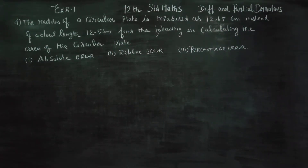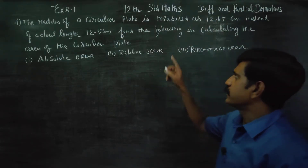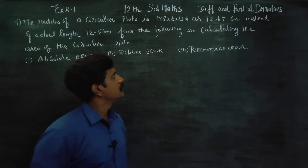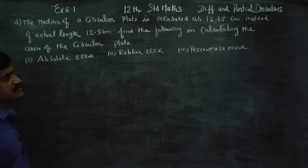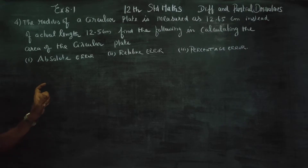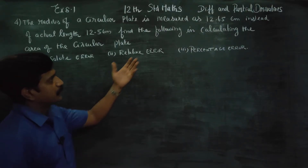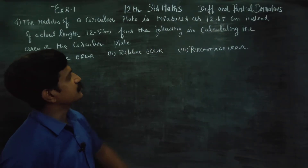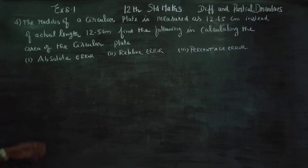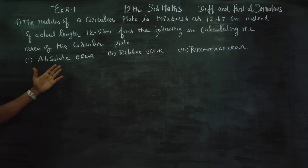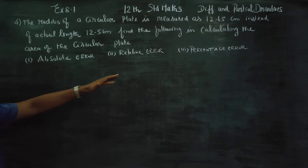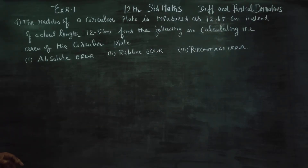Dear 12th standard students, I am Yitru Karnagaran. In exercise 8.1, sum number 4: the radius of a circular plate is measured as 12.65 instead of the actual length 12.5. Find the following — absolute error, relative error, and percentage of error in calculating the area of the circular plate.